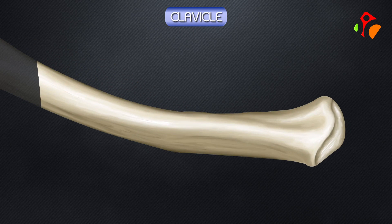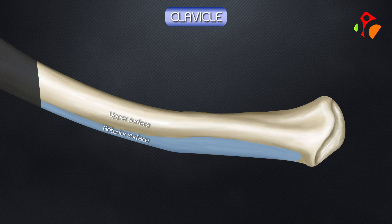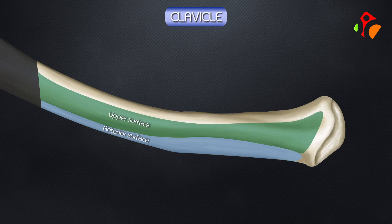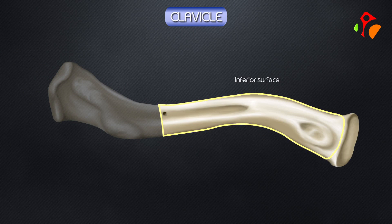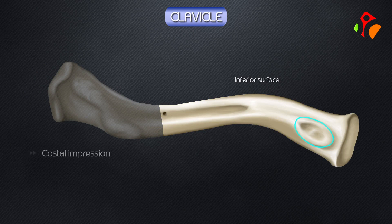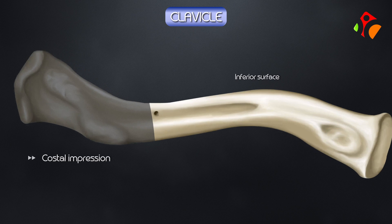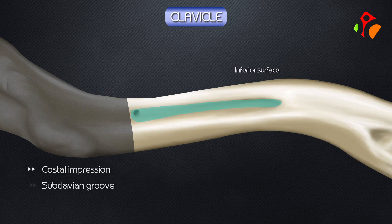The medial two-thirds presents with four surfaces. The anterior surface is rough and convex. The posterior surface is smooth and concave. The inferior surface presents with the costal impression that gives attachment to the costoclavicular ligament and the subclavian groove.